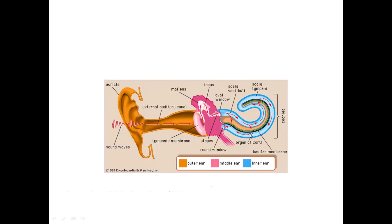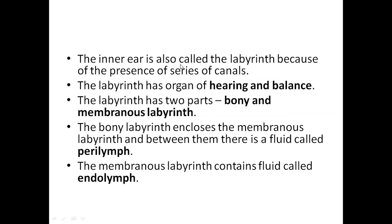Sound perception and interpretation occurs in the brain. Now let us understand how exactly this takes place. The inner ear is also termed the labyrinth — it is the main organ of hearing and balance. It is made up of two parts: the bony labyrinth and the membranous labyrinth. The bony labyrinth encloses the membranous labyrinth — it is like inserting a test tube inside another test tube.